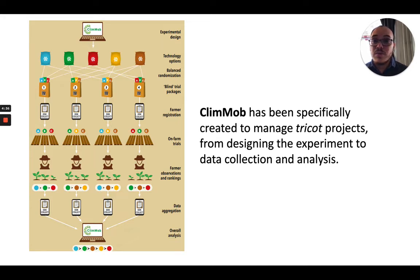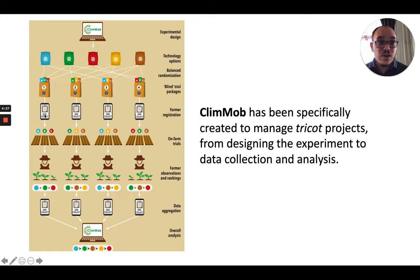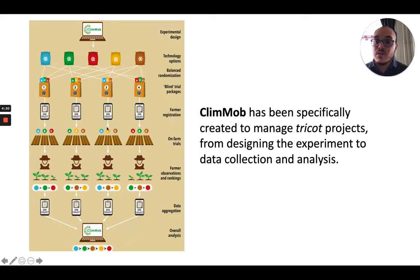You can see in this picture that Klimop is the software that we use to randomize the packages, to distribute the packages using ODK, which is a supplementary software that we use on cell phones. Then the experiments are set up in the field and the data is collected also using ODK, which is sent to Klimop.